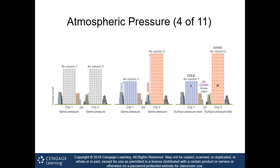Looking at column comparisons near buildings in a city: on the left, air columns one and two are at the same pressure. In the center, when we cool column one down, it becomes much shorter and the molecules more densely packed. If we heat that air column at constant pressure, we get expansion. The graphic on the right shows the general principle: everything moves from higher toward lower pressure.